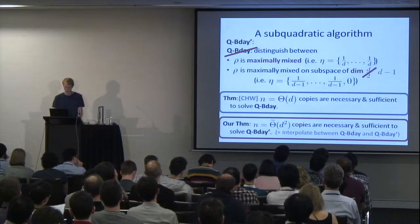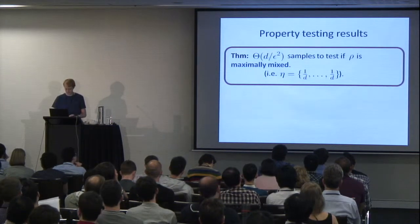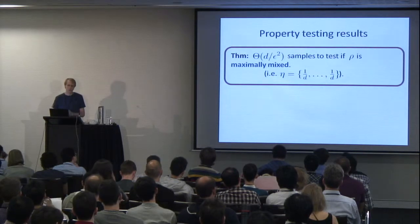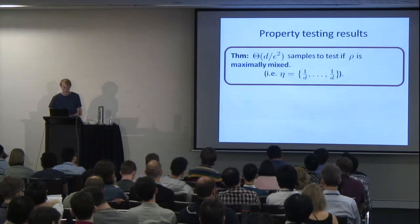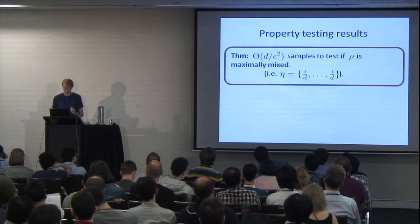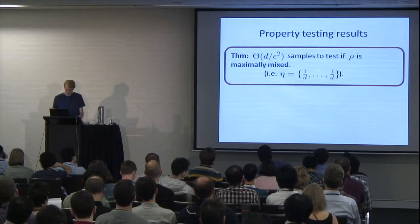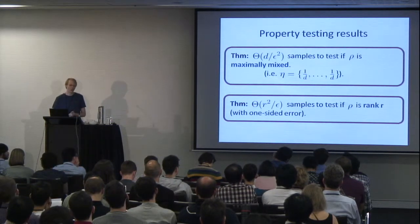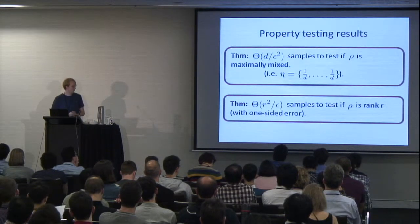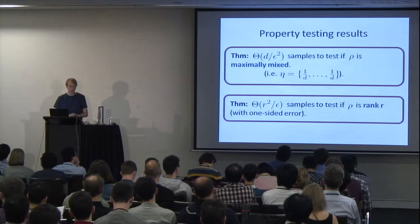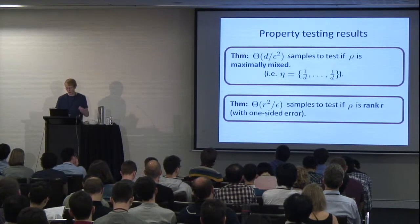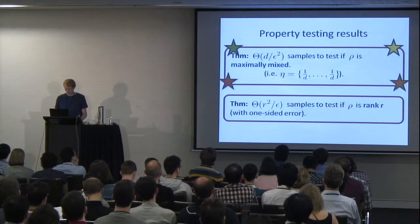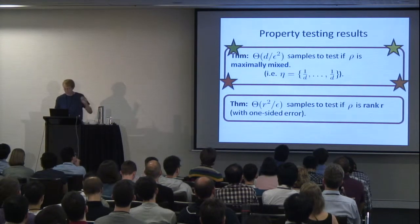Now let me tell you our final two results, which both occupy the property testing space. Our third result is that to test whether a mixed state is maximally mixed — so its spectrum is the uniform distribution — D over epsilon squared copies are both necessary and sufficient. Our fourth result is that to test whether the unknown mixed state has rank R (only R non-zero eigenvalues), R squared over epsilon samples are both necessary and sufficient, at least with one-sided error.